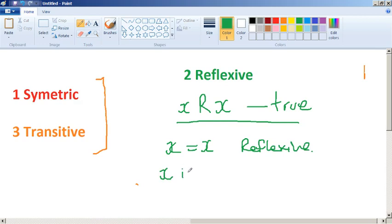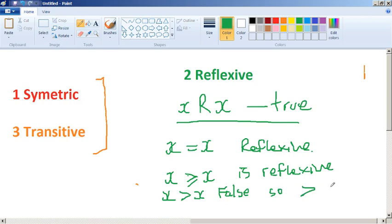X is always related to itself. Bob is going to be related to himself. So related to is reflexive. X is greater than or equal to x is reflexive. But x is greater than x, that's not true. That's false. So greater than is not reflexive.